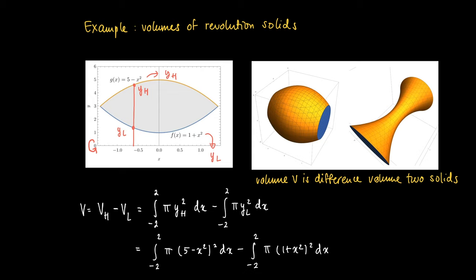Performing the calculations, which are not hard in this case, we get the difference of the blue star solid minus the green star solid. We are left with two rather easy integrals, and after performing the calculations you may find that the volume equals 32 pi.